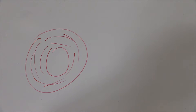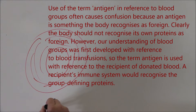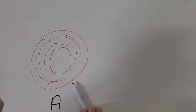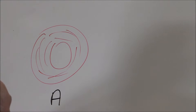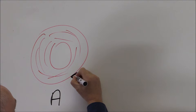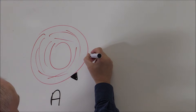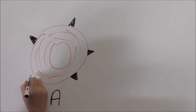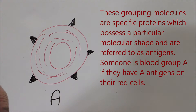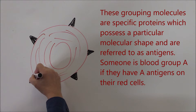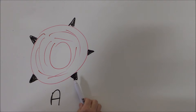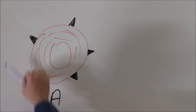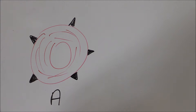An antigen is anything a recipient will recognize as being foreign. So this is blood group A — the reason blood group A is blood group A is because it has A antigens on its surface. We can represent these like this — those glycolipids I was talking about. They're genetically determined in a Mendelian manner and are molecules of a particular shape on the surface of the red cell. For the purposes of this lesson, we've made these group A antigens pyramid-shaped. So this is blood group A because it has A antigens on the red cells.